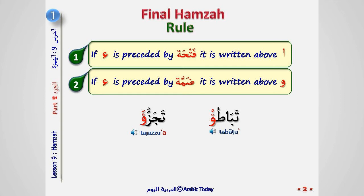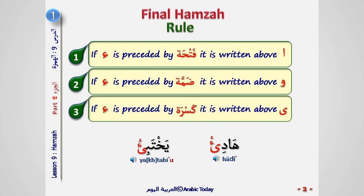Examples: Tabat'u, Tajazzu'u. If Hamza is preceded by Kasra, it is written above Nabira.